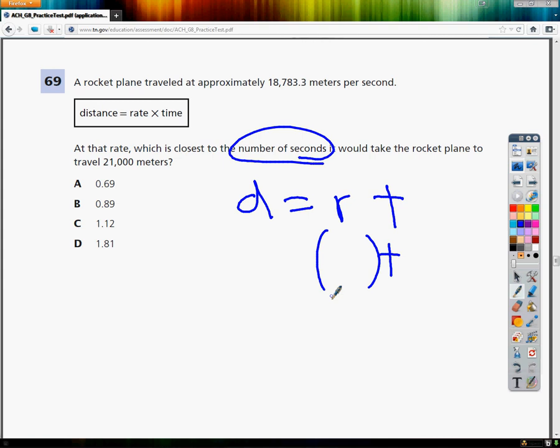In my R, I'm going to put the rate. I realize now that I need to make a much bigger box. Because the rate would be something where you have the word per in it, so meters per second. So I do 18,783.3, and that's meters per second.